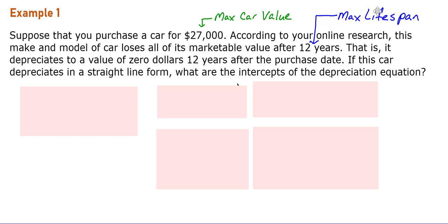This is going to be the max lifespan. That is, it depreciates to a value of $0 twelve years after the purchase date. If this car depreciates in a straight-line form, what are the intercepts of the depreciation equation?